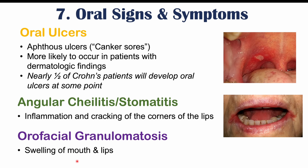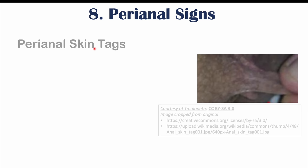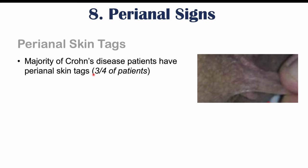Perianal findings can also occur in Crohn's disease, including perianal skin tags. A majority — up to three quarters — of Crohn's disease patients have perianal skin tags, which are painless. However, perianal skin tags don't necessarily indicate Crohn's disease, as they can also occur in people with hemorrhoids and anal fissure disease.